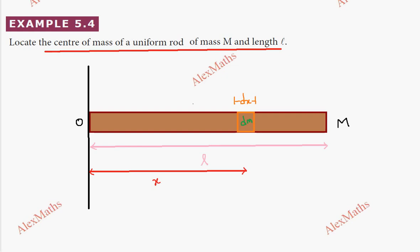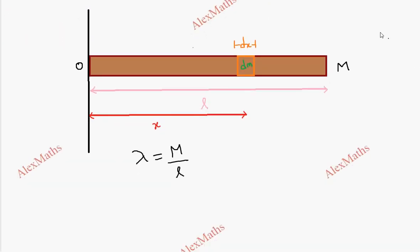We define lambda equal to m by L. This is the linear mass density — that is, mass per unit length — so lambda equals m by L.